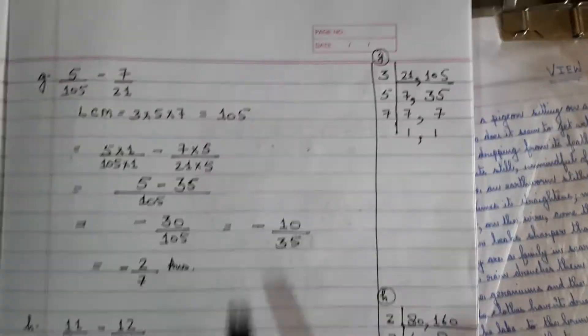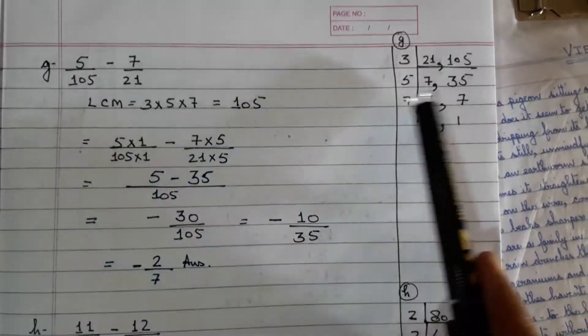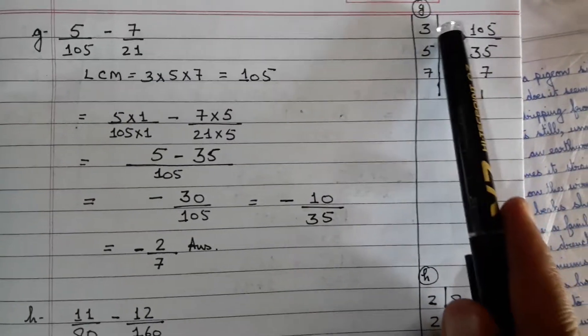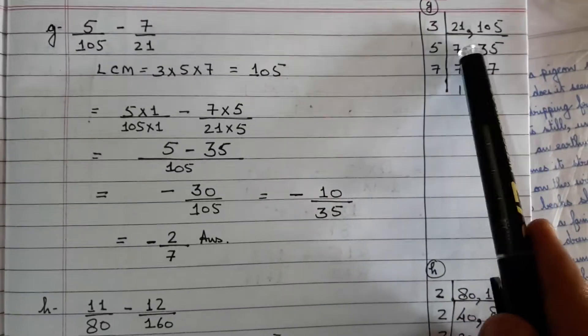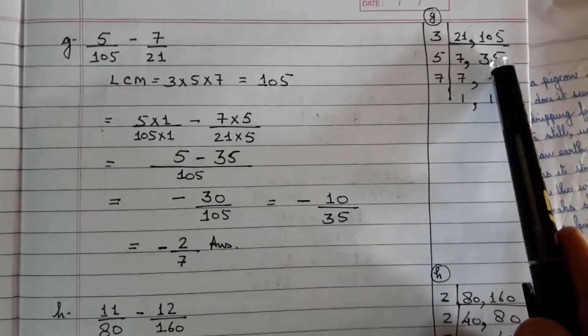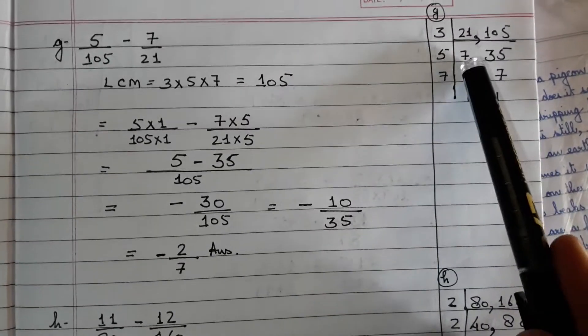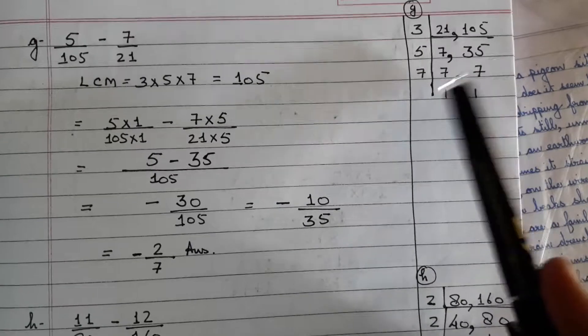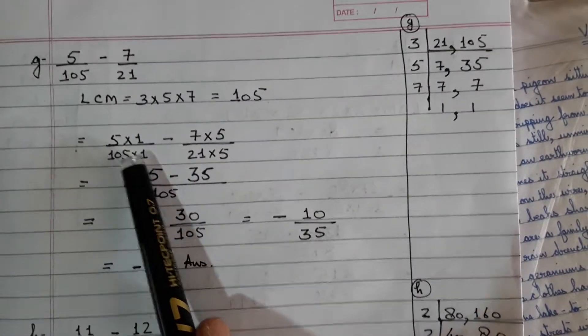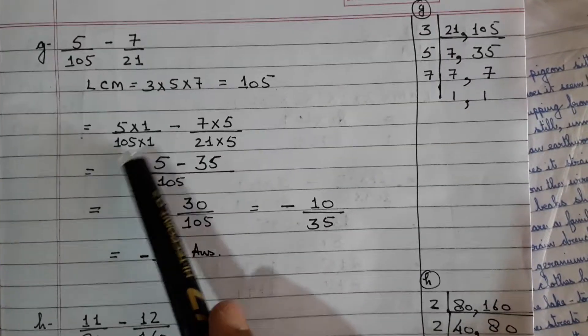Now look at this one. 5 over 105 minus 7 over 21. 21 and 105, again use the divisibility test. 1 plus 5 is 6, 2 plus 1 is 3. So 3 can divide them. 3×7s are 21, 3×35s are 105. 5 can divide 35 seven times and 7 will come down. So 105 is your LCM. To make it 105, you multiply this by 1, so multiply the numerator by 1. But 21×5 will be 105, so 7×5 will be 35.